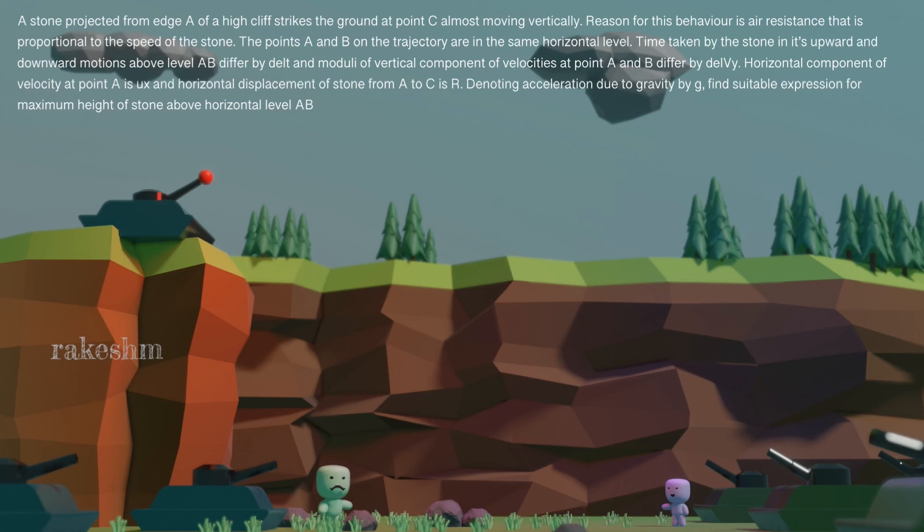So let us take a look at this question from the book Pathfinder Chapter Kinematics. A stone projected from edge A of a high cliff strikes the ground at point C almost moving vertically. So stone is projected from here and it lands here. It starts from A and lands at C, and when it lands at C it is almost moving vertically, which means we can take the horizontal component of velocity at C to be 0. Reason for this behavior is air resistance that is proportional to the speed of the stone. So here it has a horizontal component of velocity and here its horizontal component of velocity is 0, and this is due to the air resistance on the stone.